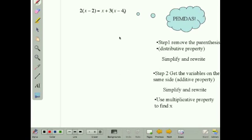So we have a problem that says 2 times the quantity of x minus 2 is equal to x plus 3 times x minus 4.